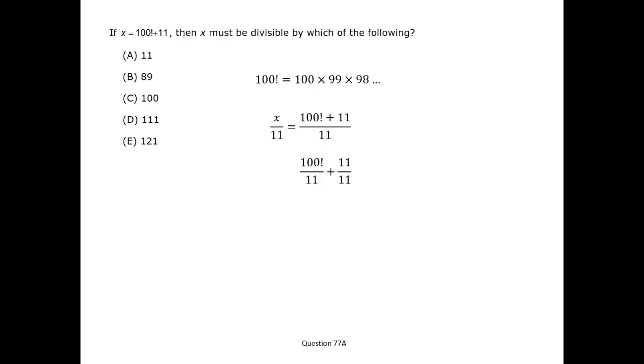100 factorial is divisible by 11, because 11 is one of its many, many factors. Therefore, x divided by 11 is an integer, and x is divisible by 11.